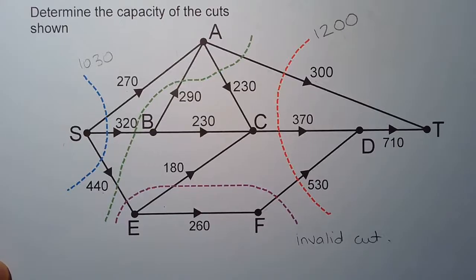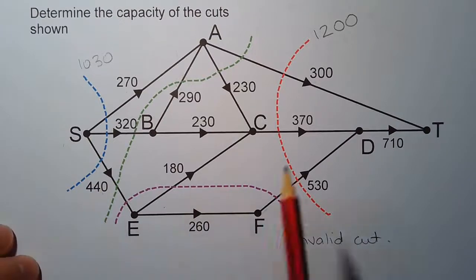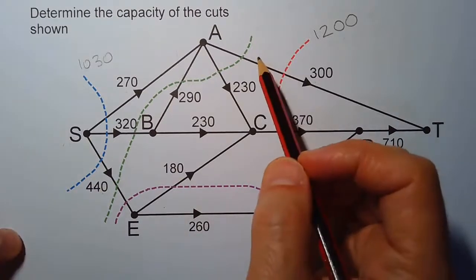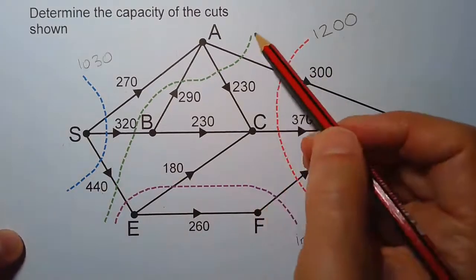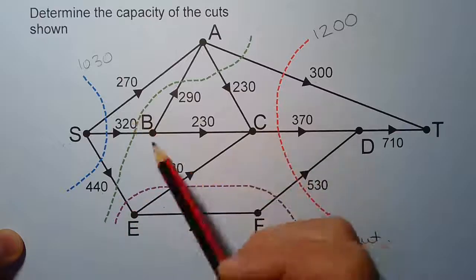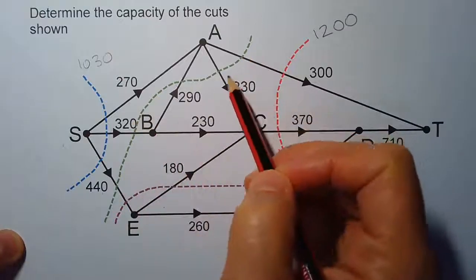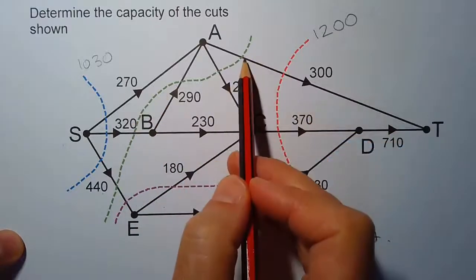We can't measure the capacity of the purple cut because it doesn't count as a cut. A cut must separate the source from the sink. That leaves us now with the last cut — the green one — and it passes through quite a few edges.